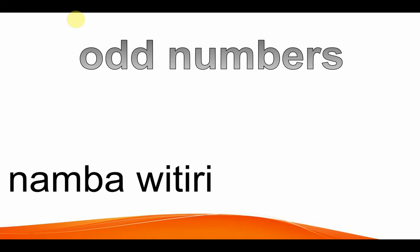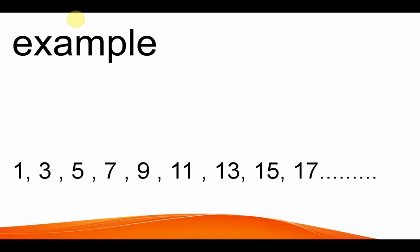Here we go. Odd numbers, number witiri. These numbers are those that are divisible by two and it reminds one. Divisible by two and it reminds one. There is a remainder, one is a reminder. Let's check. Example. One is odd. Three is odd. Divide by two, it goes in one time, remainder one. Five is odd. Because divide by two, it goes in two times, remainder one. And so on.